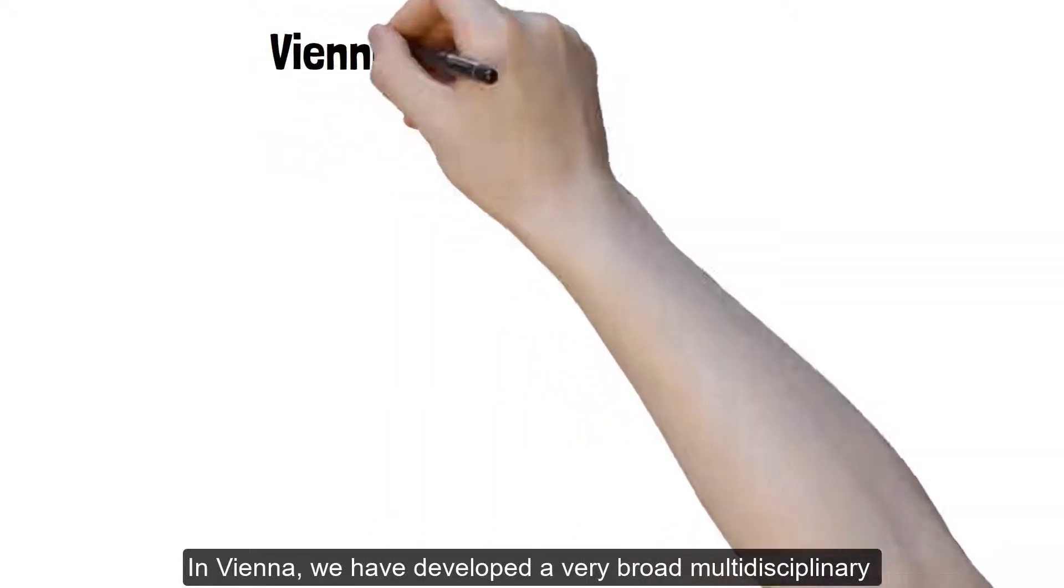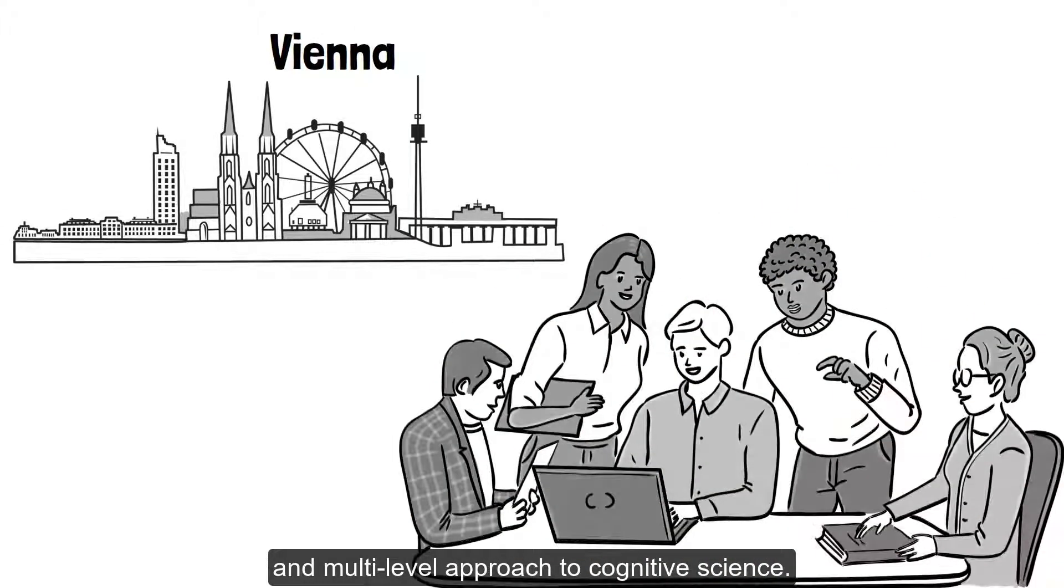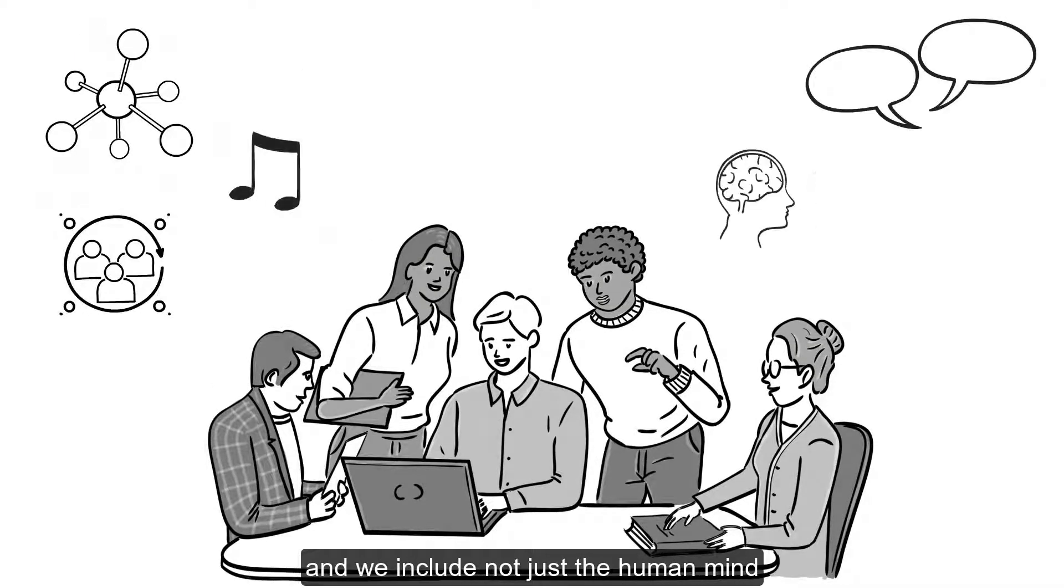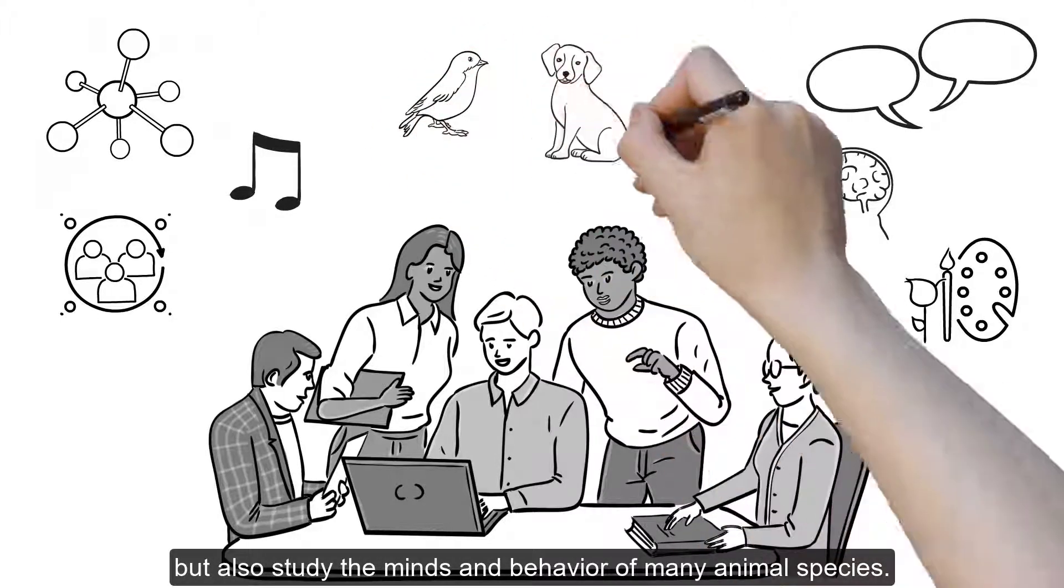In Vienna, we have developed a very broad, multidisciplinary and multilevel approach to cognitive science. This spans from molecules to the humanities, and we include not just the human mind, but also study the minds and behavior of many animal species.